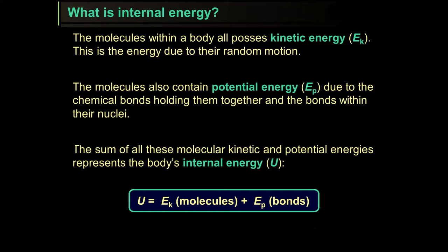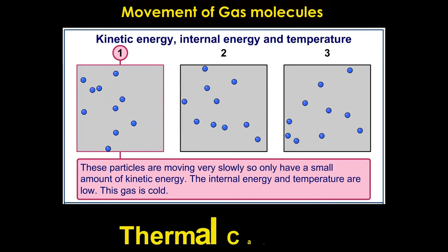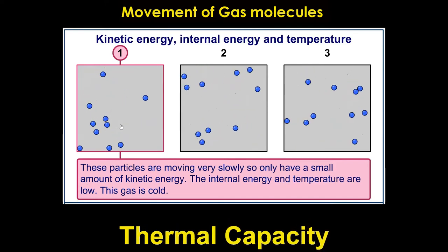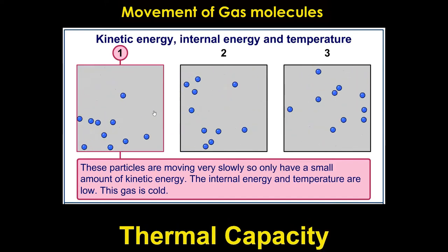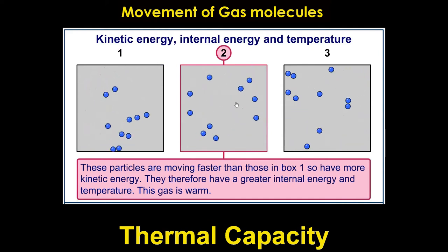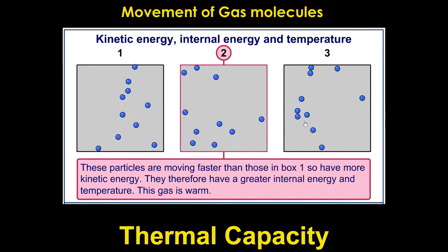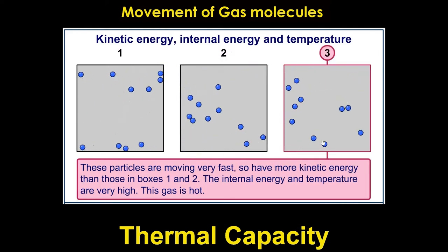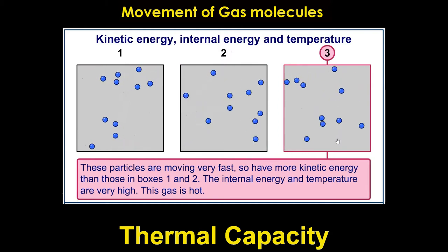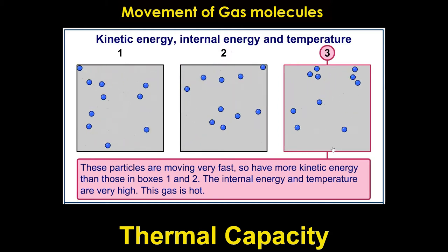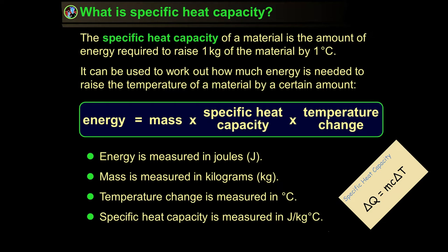Internal energy is the sum of all molecular kinetic and potential energies present in a body. In this animation, in number one the gas is cold and particles are moving slowly, in number two the particles are moving faster and the gas is warm, and in number three the gas is hot and the particles are moving very fast.